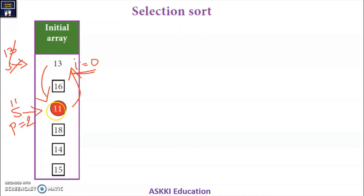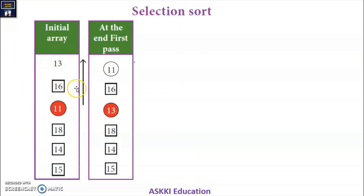11 is going to move to position 0 and 13 is going to move to position 2. So at the end of the first pass, we have the smallest element in its correct place.